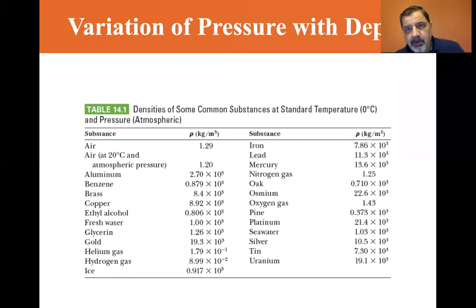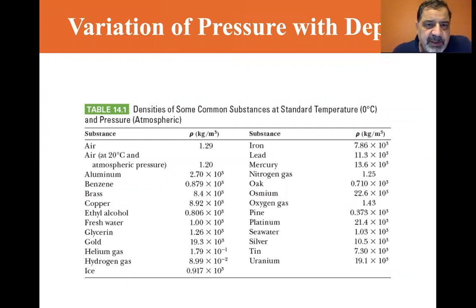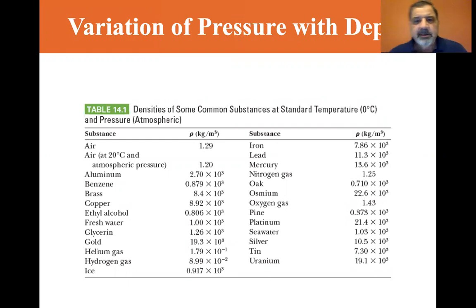We're at section 14.2, variation of pressure with depth. We start off with a density table — Table 14.1, densities of some common substances at standard temperature: zero degrees Celsius and standard pressure, which is one atmosphere.